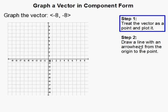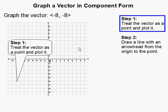So first thing we do is simply treat the vector as if it was a point, and then we plot that point. Just ignore these and pretend they're parenthesis and say, okay, negative 8 comma negative 8. Alright, and that's right here.